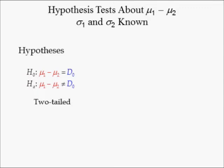The alternative hypothesis, HA, is the opposite of the null. The opposite of the above null hypothesis is: the difference in female and male worker annual earnings is not equal to $5,000. This could be phrased as: the difference in female and male worker annual earnings is less than or greater than $5,000.